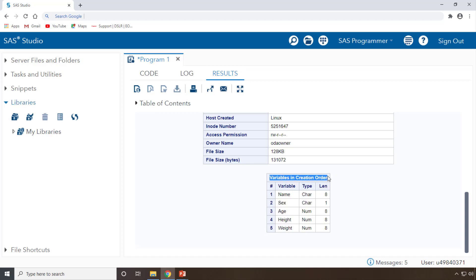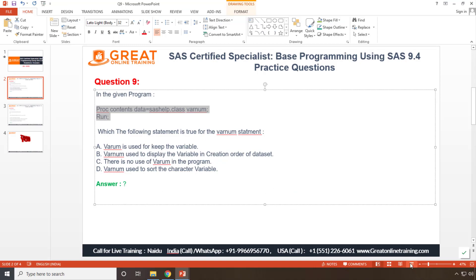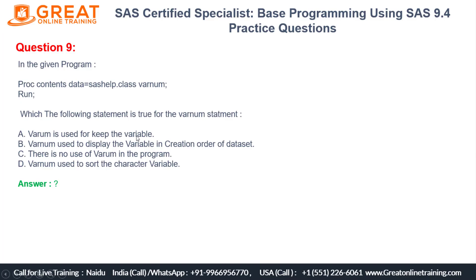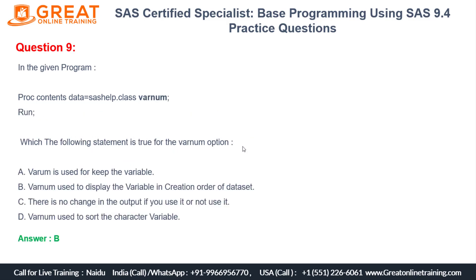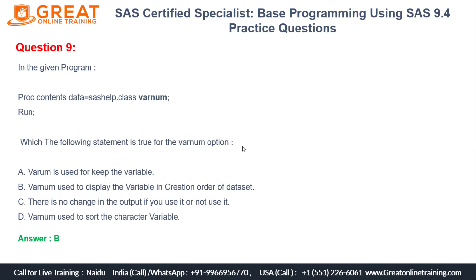VARNUM is used to sort the variables in creation order — however you created them in the dataset. Looking at the answer options: 'VARNUM is used for keeping the variables' — that is not correct. 'VARNUM is used to display the variables in a creation order of dataset' — yes, that's correct. The right answer is B: VARNUM is used to display the variables in creation order. That's all for question number nine. Thank you for watching — please like, subscribe, and activate the bell icon for more updates. See you in the next video.